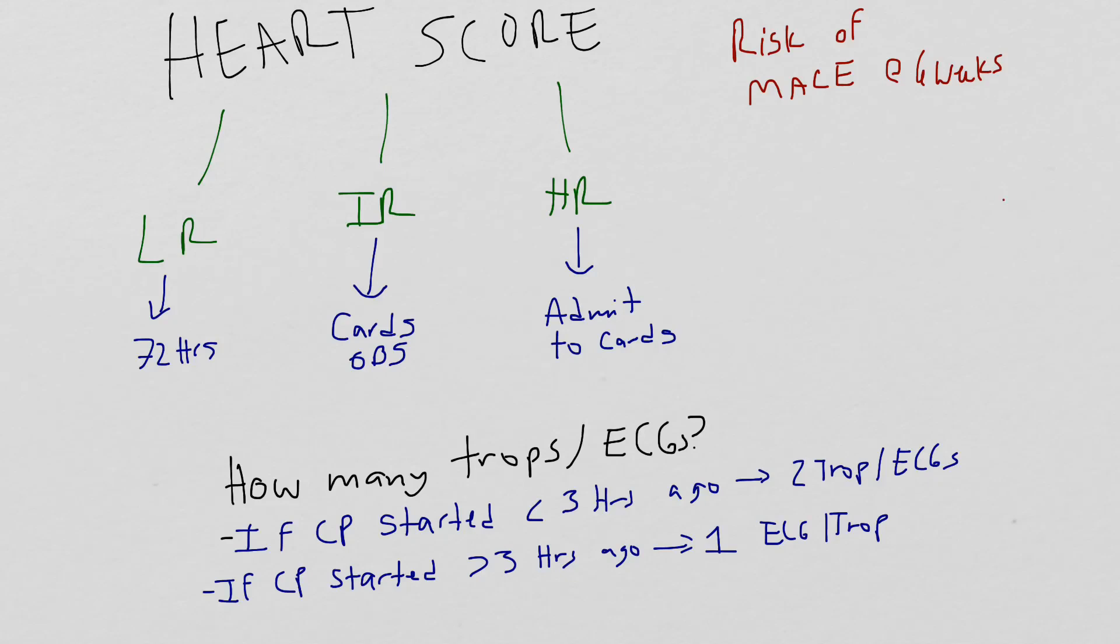This is because most modern troponin assays can now detect troponin elevations as early as three to four hours after onset of myocardial injury. Although there are some people who get two sets of EKGs and troponins on everybody to complete the ACS rule out.